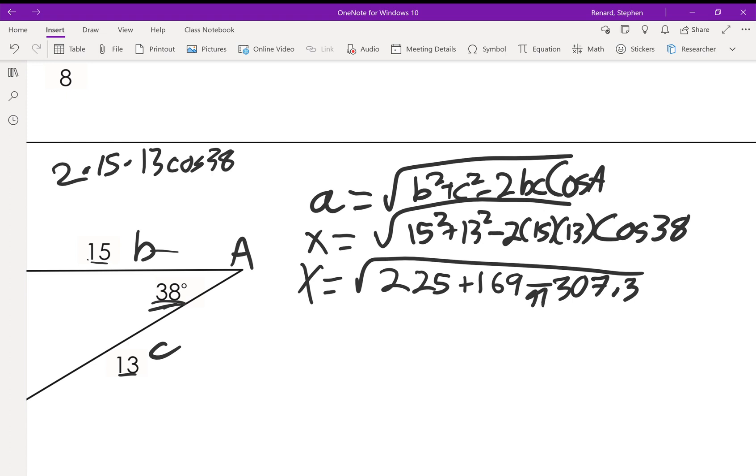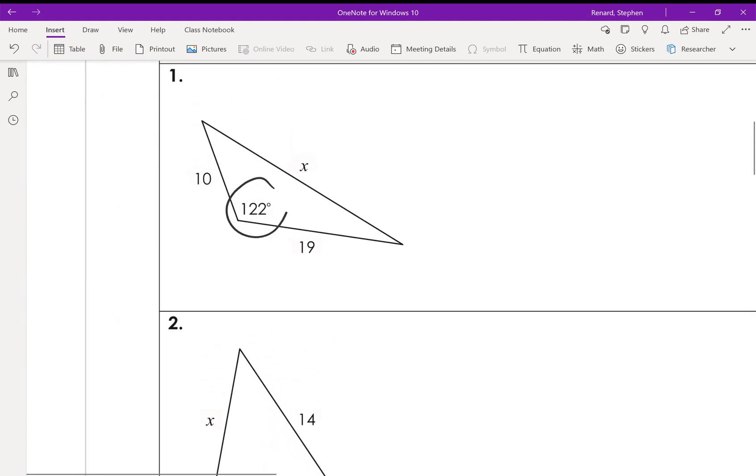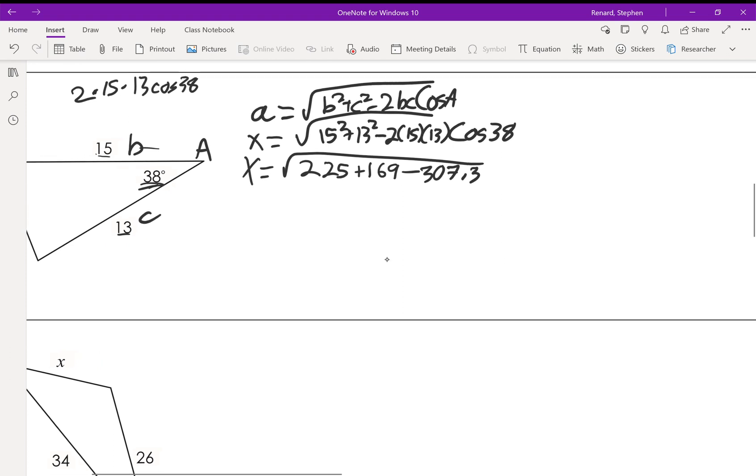Okay, so we go 2 times 15 times 13, 15 is the cosine of 38, and that gives us 307.3. Now be careful here because this negative right here, that's built into the equation. So on some of these where we're given like this one right here, that cosine of 122 is going to be a negative number. So when we plug that in, we're actually going to have a positive here because it's going to be a negative of a negative. So if you've already done that, go back, take a look at it, make sure that when you put in that we're just adding all those.